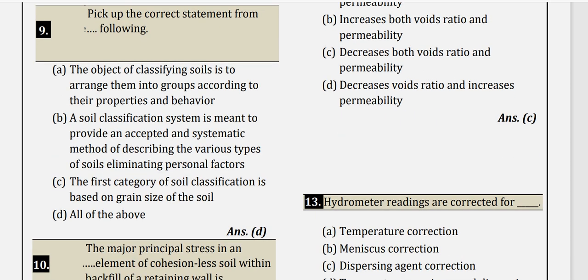Question 9: Pick up the correct statements about soil classification. The object of classifying soil is to arrange them into groups according to their properties and behaviors. A soil classification system provides an accepted and systematic method of describing various types of soil, eliminating personal factors. The first category of soil classification is based on grain size. All of the above are correct, so option D is correct.